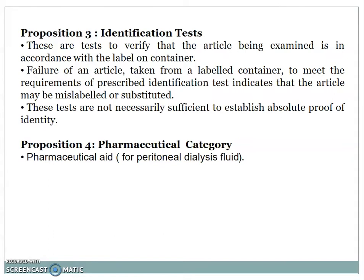Proposition 3: Identification test. These are the tests to verify that the article being examined is in accordance with the label on the container. Failure of an article taken from the labeled container to meet the requirement of prescribed identification test indicates that the article may be mislabeled or substituted.